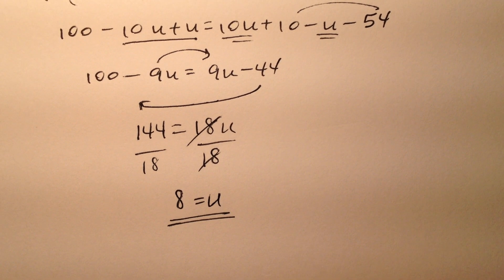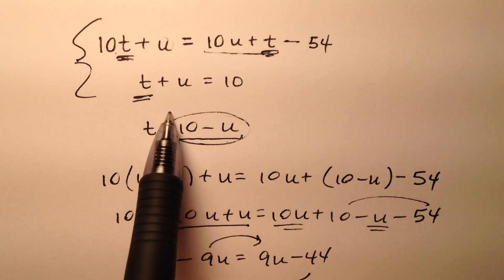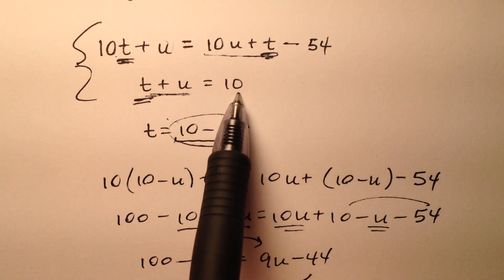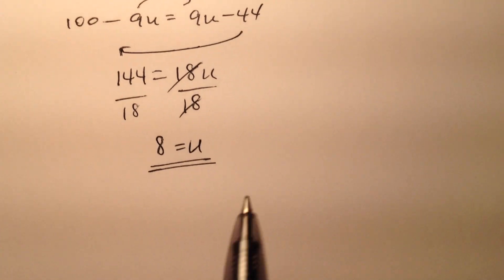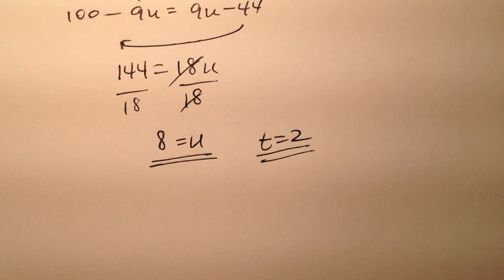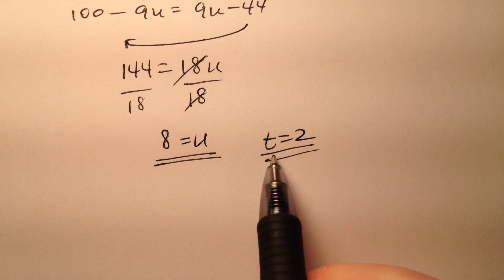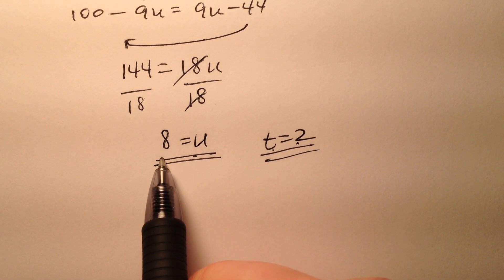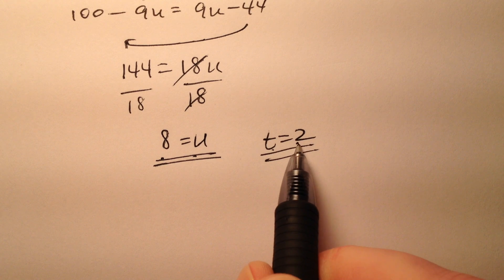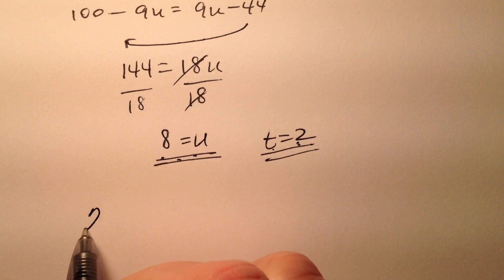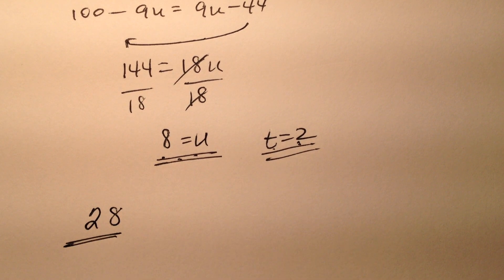If U is 8 and the two digits add to 10, then T must be 2. Let's verify that this is correct. If T is 2 and U is 8, my original number was 28.